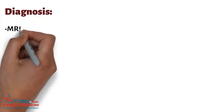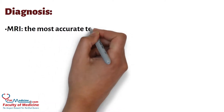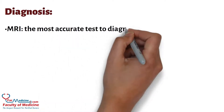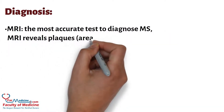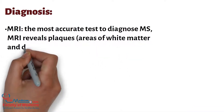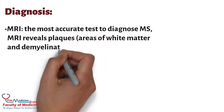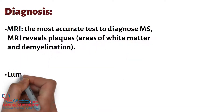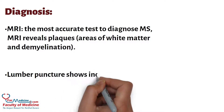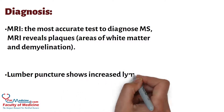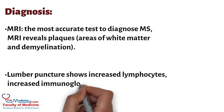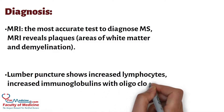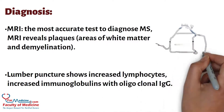Diagnosis: MRI is the most accurate test to diagnose MS and reveals plaques, areas of white matter and demyelination. Lumbar puncture shows increased lymphocytes and increased immunoglobulins with oligoclonal immunoglobulins.